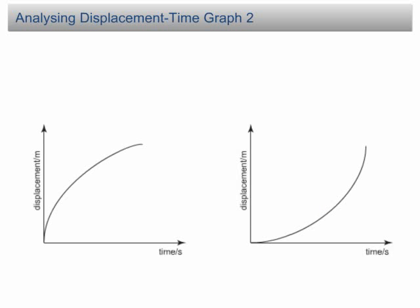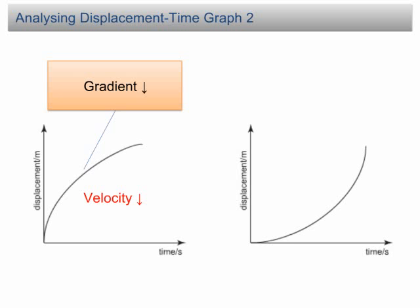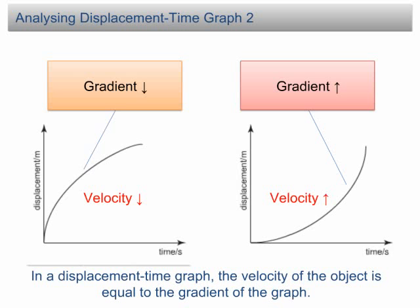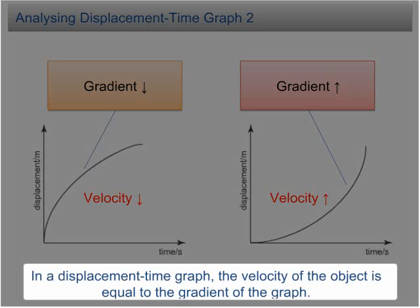Analyzing displacement time graph 2. Let's continue with the non-straight line graph. In the first graph, the gradient of the graph decreases over time. This decrease of gradient suggests that the velocity of the object decreases over time. In the second graph, the gradient of the graph increases over time, therefore the velocity of the object increases over time. Always keep in mind: in a displacement time graph, the velocity of the object is equal to the gradient of the graph.